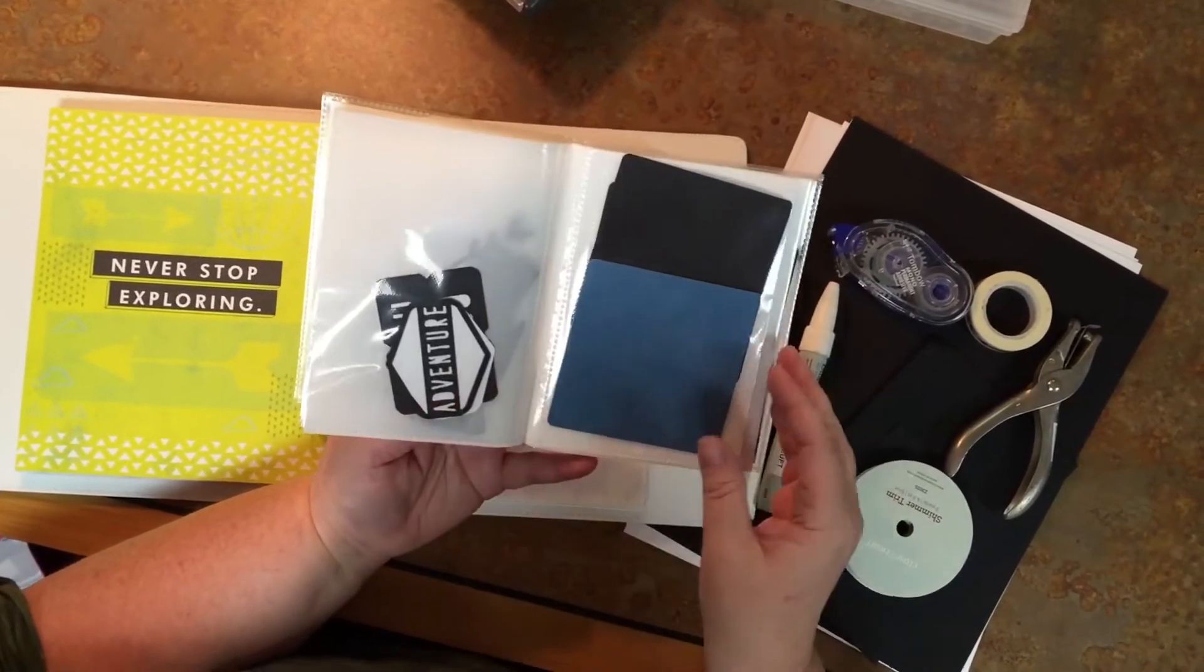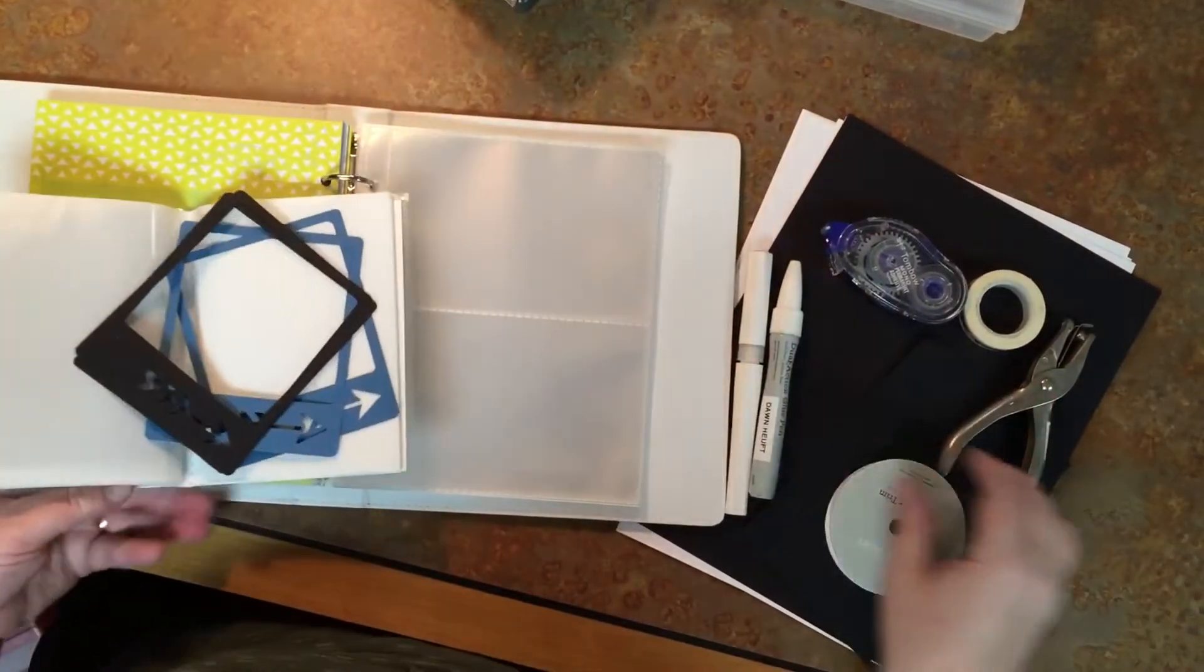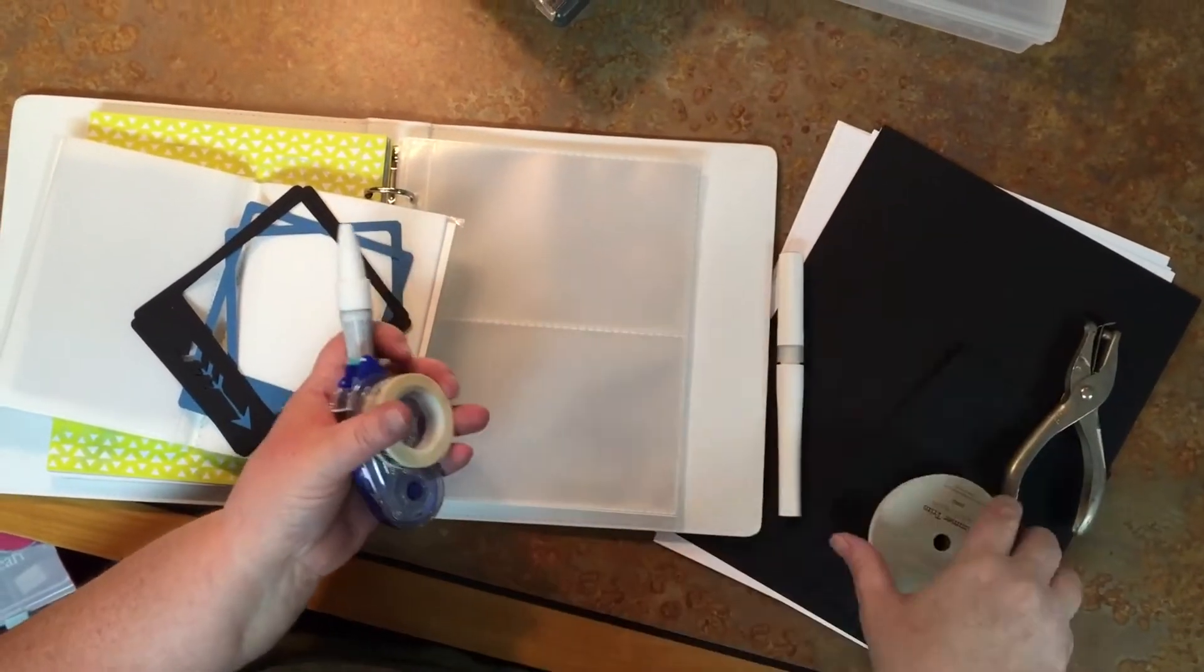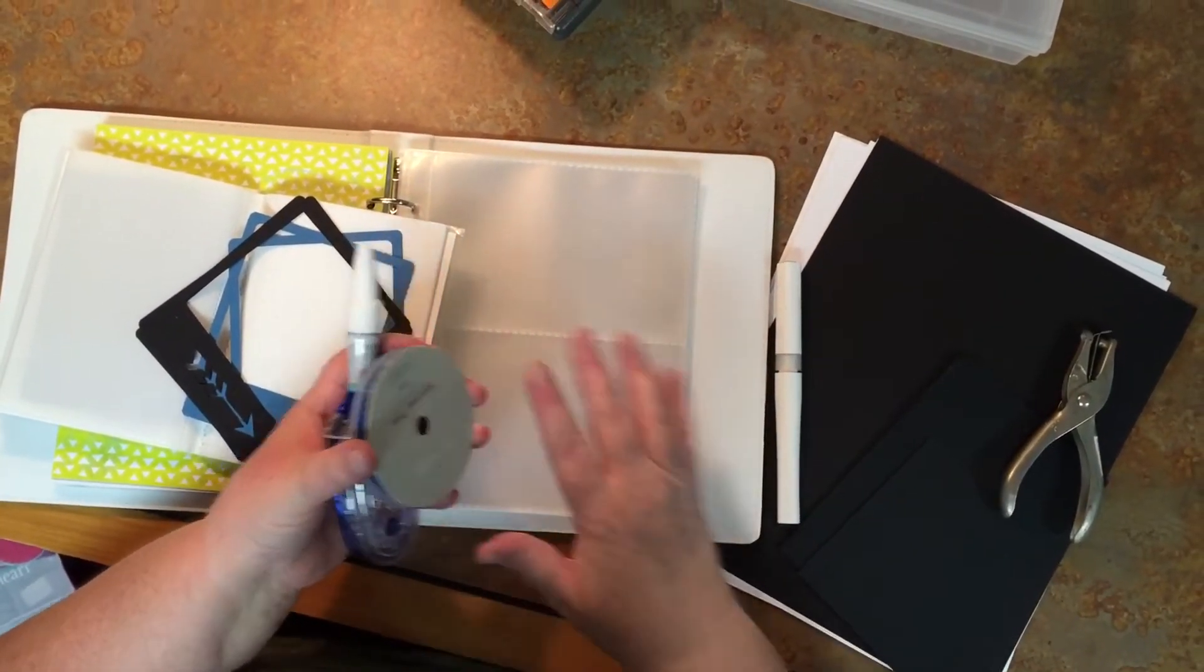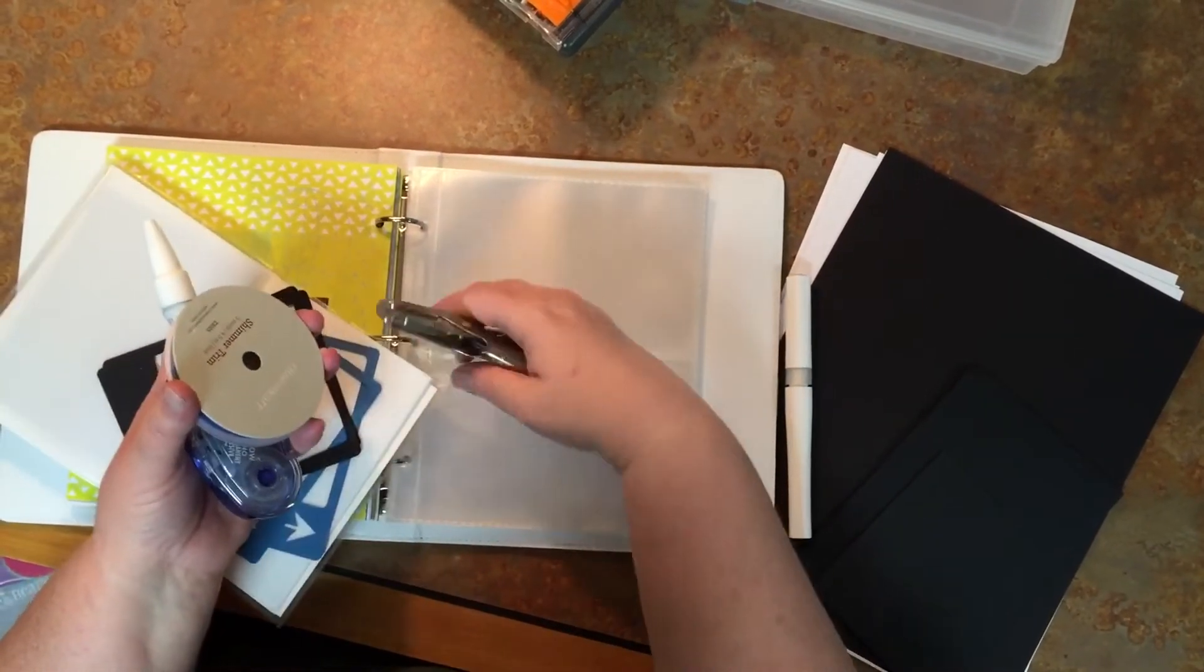I have the state stamps here, and just a variety of things, some little photo holders. And I have glue, and a Tombow Tape Runner, some washi tape, some shimmer trim. We always need shimmer trim, right? A hole punch, if I want to punch holes in anything, just add it to the book.